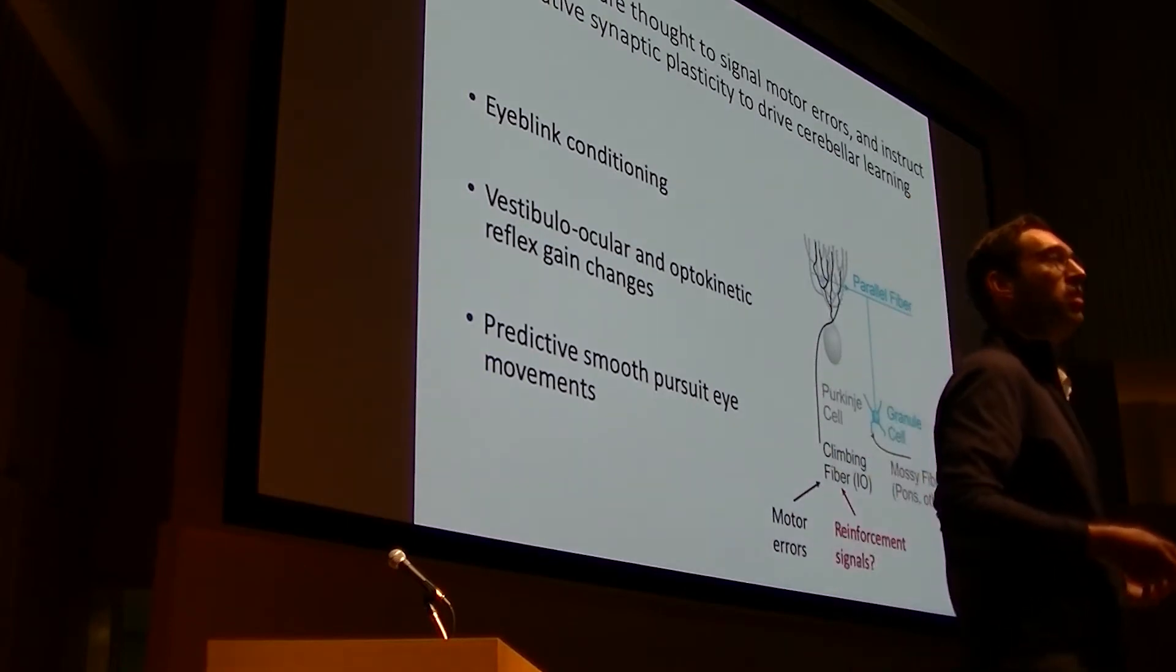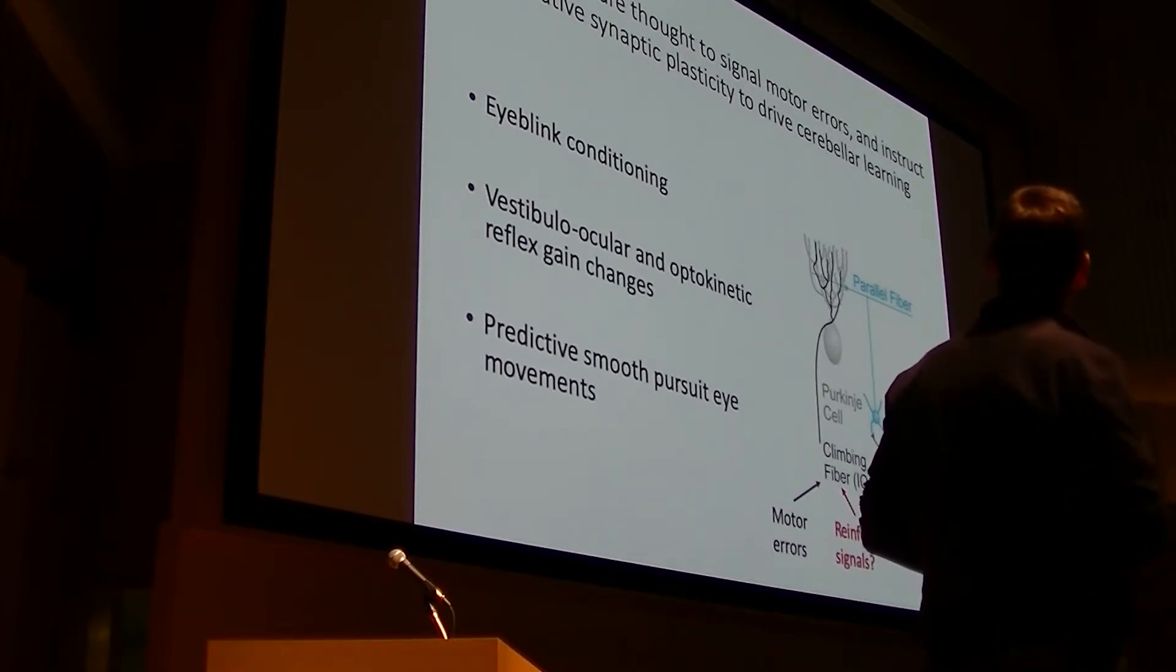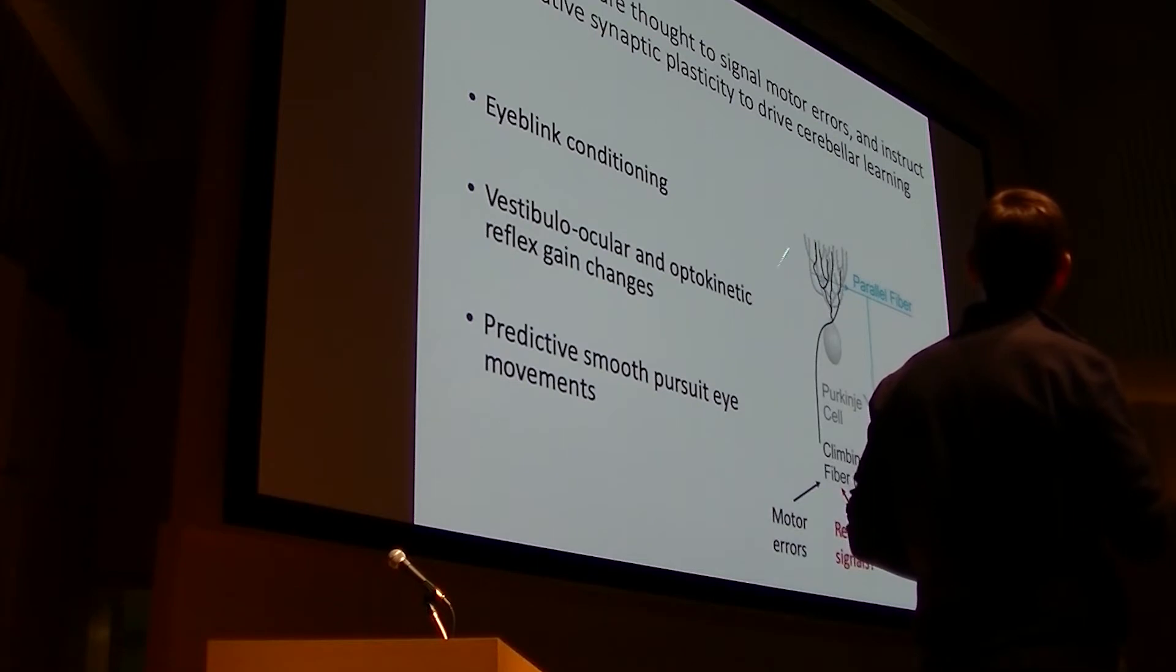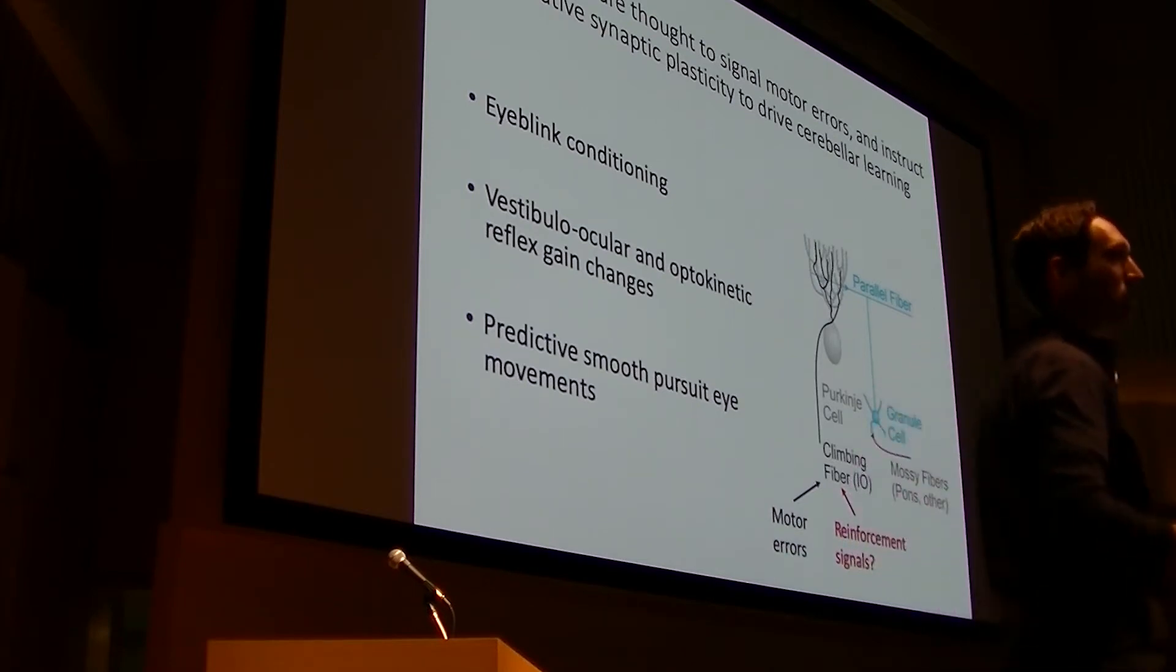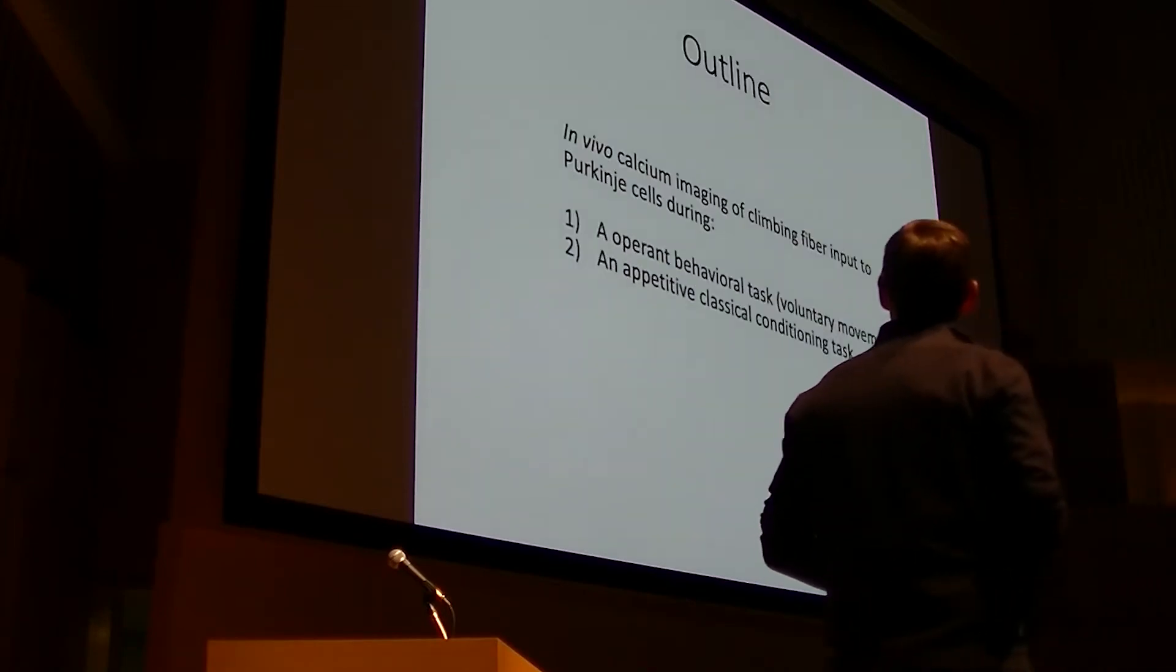By what neural mechanism might the cerebellum contribute to learning that's not guided by motor errors? And in particular, in such paradigms, what would these climbing fibers be doing? And how might they provide a meaningful instructional signal to guide learning?